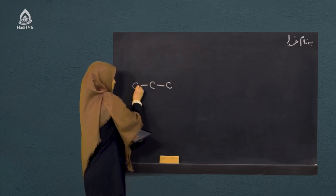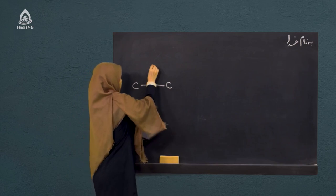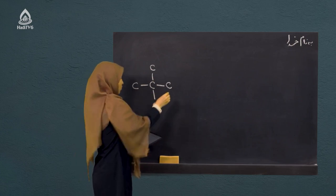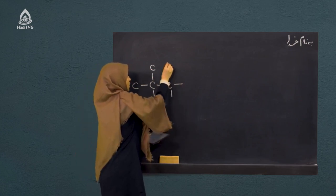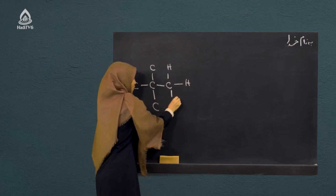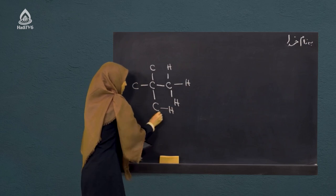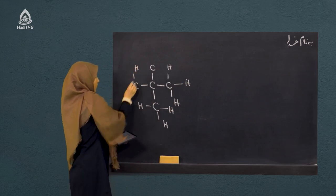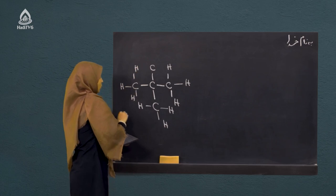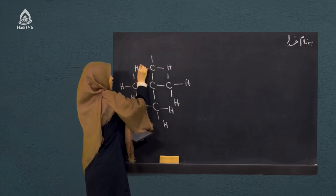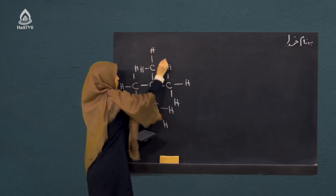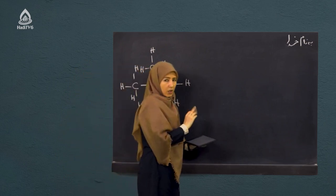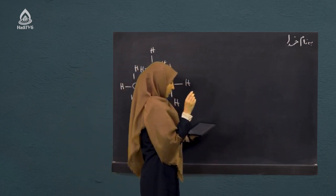ساختار اول: اتم کاربون رابطه دارد با اتم‌های کاربونی دیگر. ما می‌دانیم که هر اتم کاربون چهار رابطه را تشکیل داده می‌تواند. اتم‌های هایدروجن را در این قسمت قرار می‌دیم. این ساختار اولیم است.